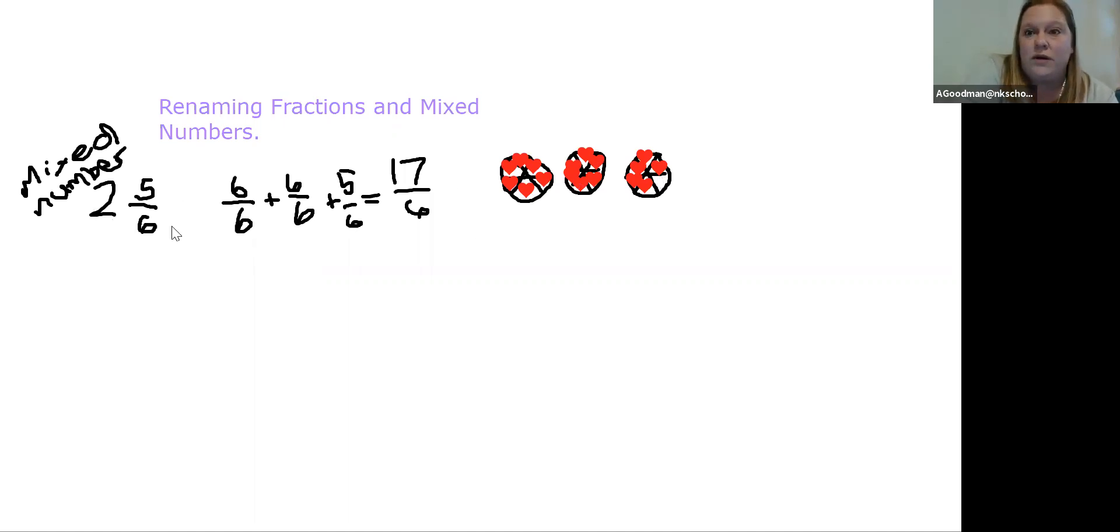So the shortcut way that you could do that is to say, so this is our denominator and we need two sets of the whole of the denominator, right? So the denominator is six. So we're going to multiply six by two in order to get the two sets of six that make the numerators. So two times six is 12, right? So we're multiplying the whole number by the denominator. And then we are going to add the leftover numerator plus five equals 17. And we leave the denominator the same.